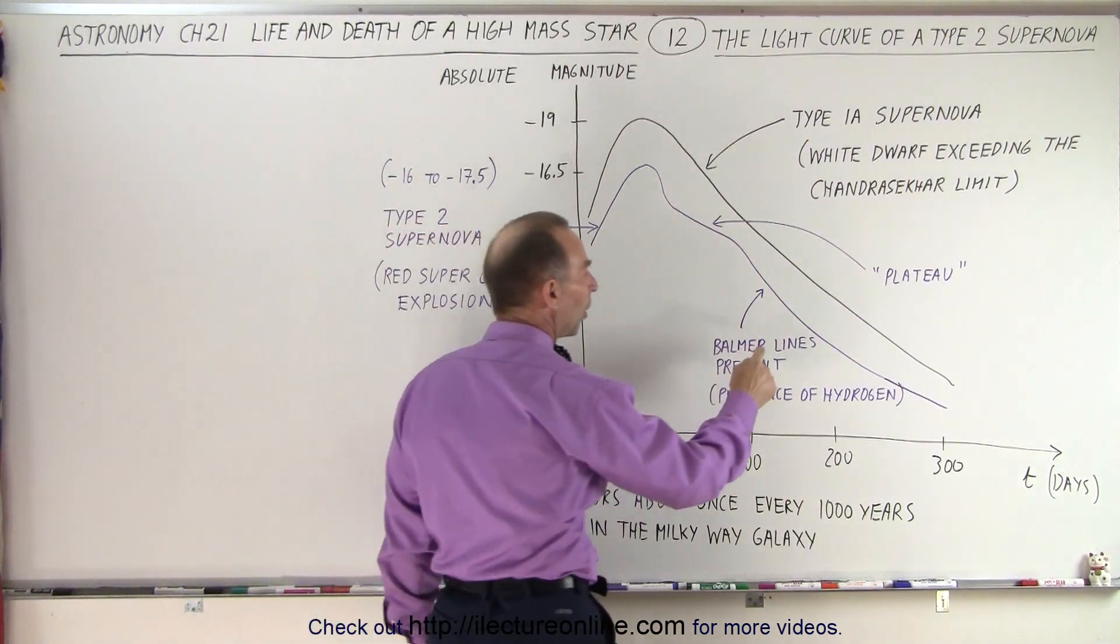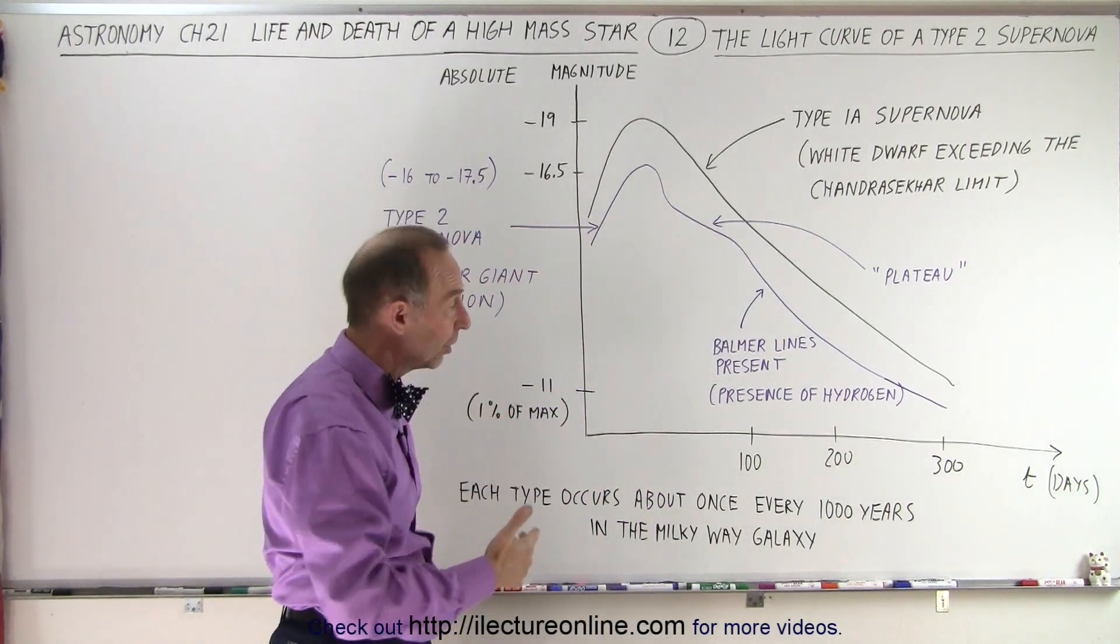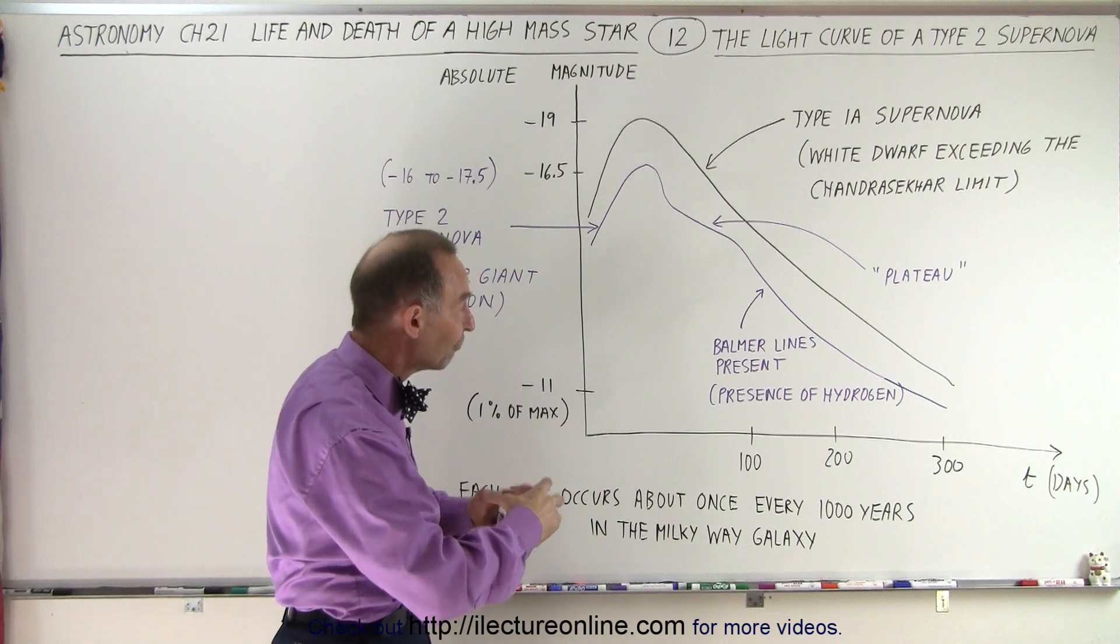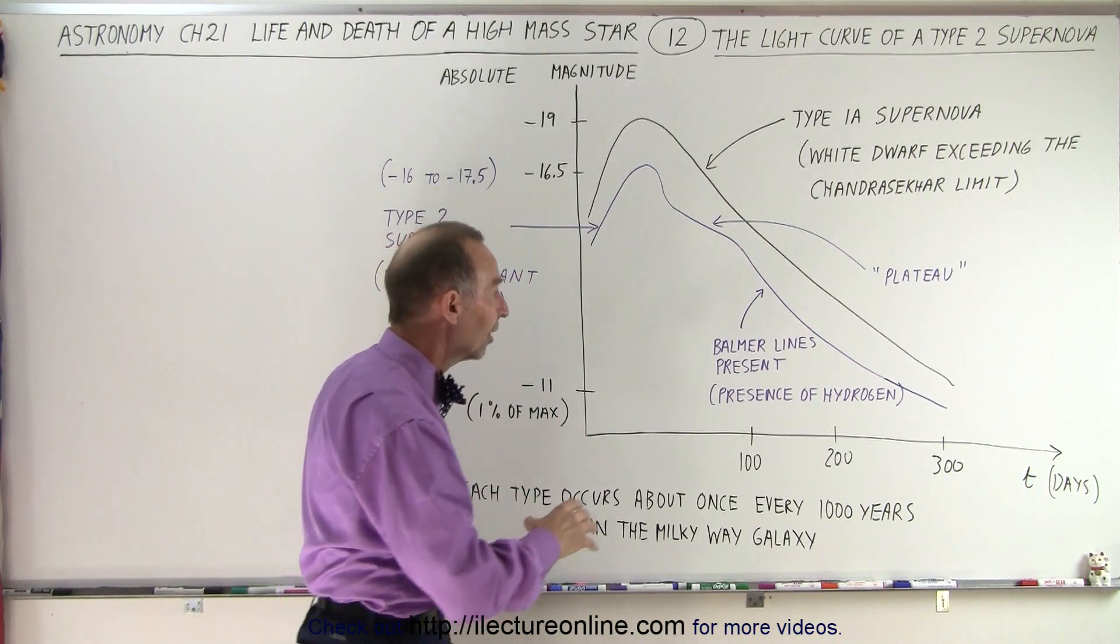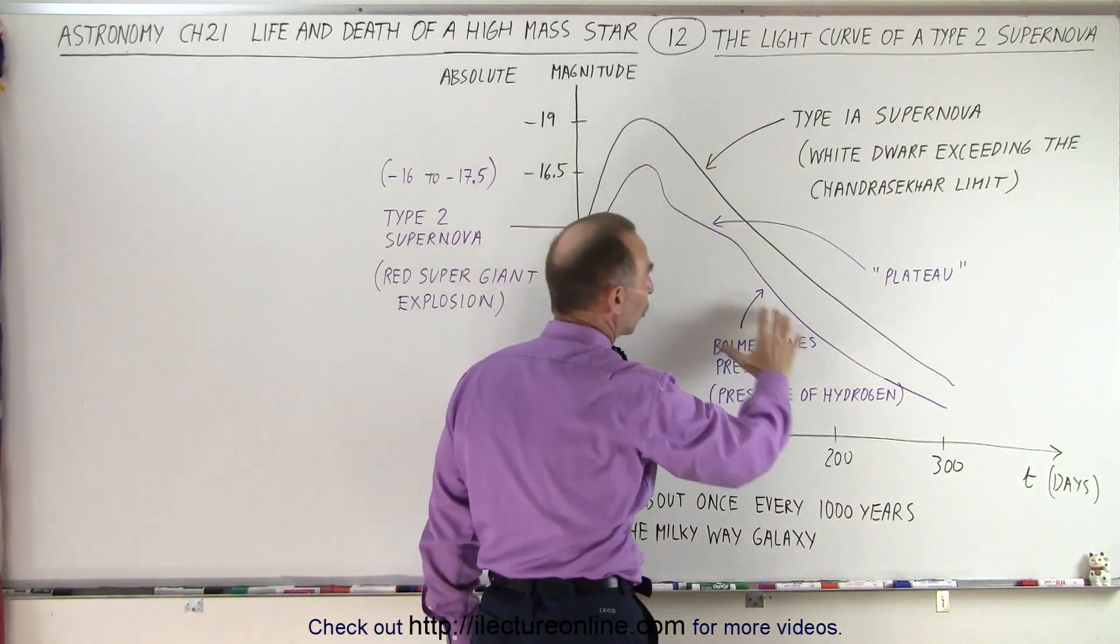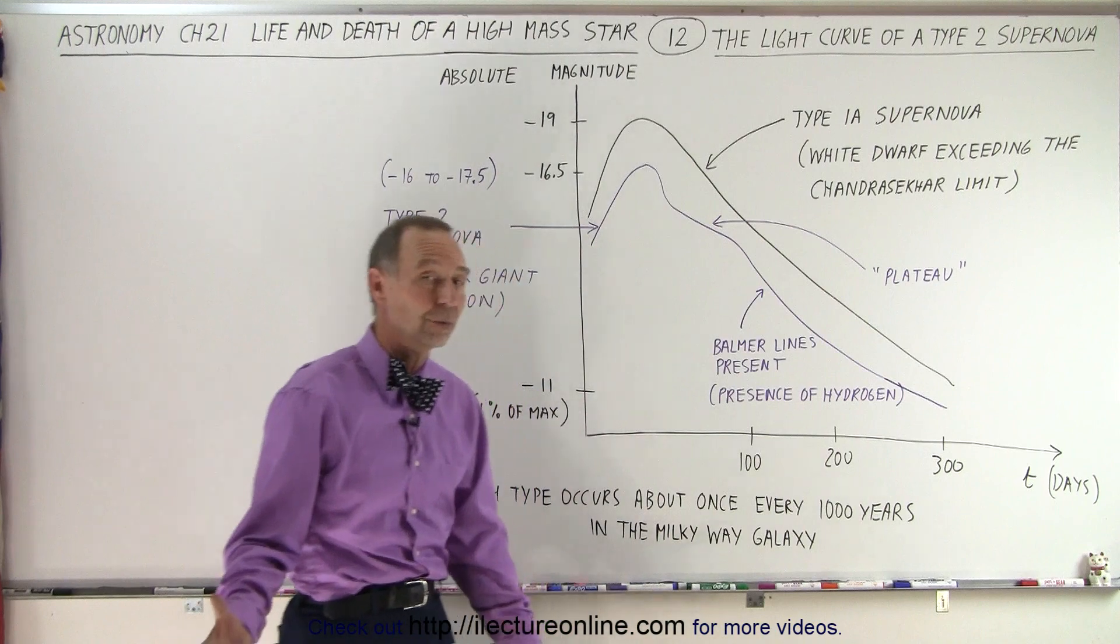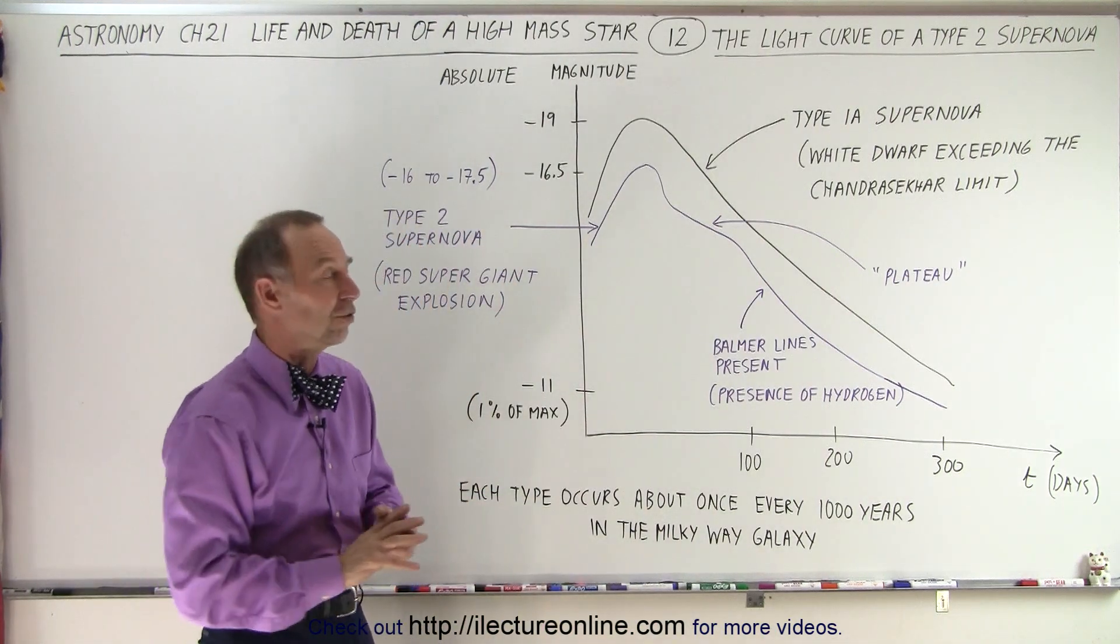Also, we see what we call the Balmer lines. These are the lines that we see in hydrogen, the red, the green, the turquoise, green, blue color, and the purple color from the electrons around the hydrogen gas, which is present in the curve of a Type 2 supernova and not present in a Type 1a supernova because that's a carbon ball that's imploding and there's very little hydrogen involved there.